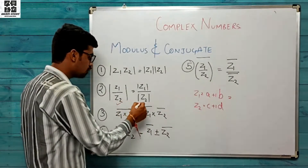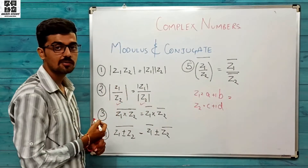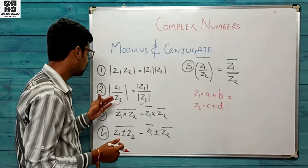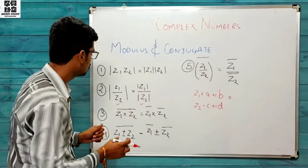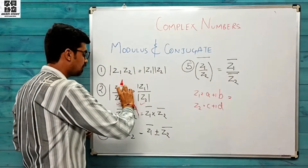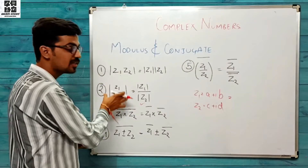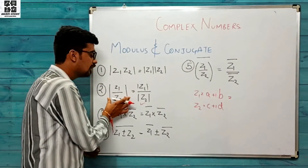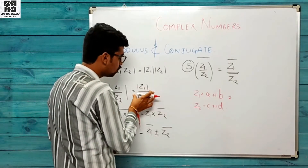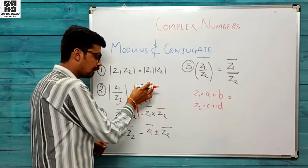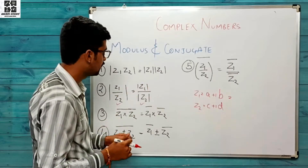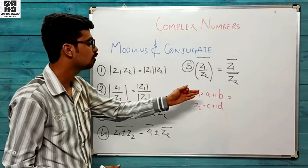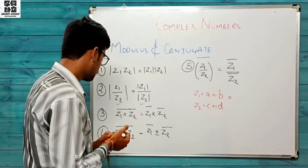Same goes for division also. Jaise ki complex numbers ke division mein padha tha ki dividing a complex number with another complex number always gives a new complex number — toh in dono ke division ke baad jo output aa raha hai, uska modulus nikaalein, toh woh individual moduli divided by each other ke equal hoga. Z1 ka modulus aur z2 ka modulus divide karoge toh bhi output same milega.